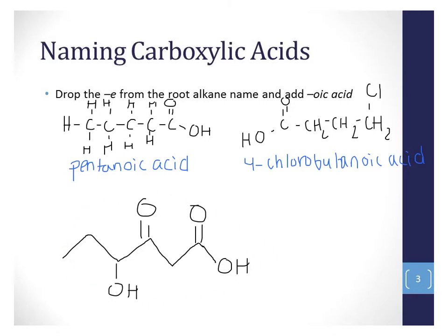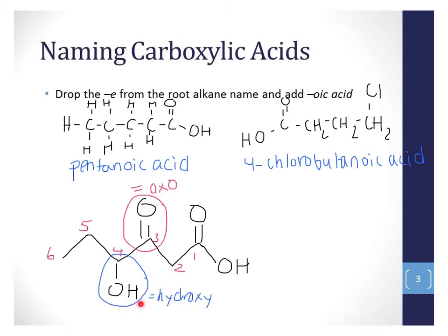This molecule has a lot of groups: we see a hydroxyl group, a carbonyl, and a carboxyl. We've been learning the functional groups in their order of priority while naming. When an alcohol group is a substituent, we call it hydroxy. When a carbonyl group is a substituent, we call it oxo. We know that because we have a carboxyl group, this must be a carboxylic acid, and just like with aldehydes, we start numbering from that carbon. So our name ends up being 4-hydroxy-3-oxo-hexanoic acid.